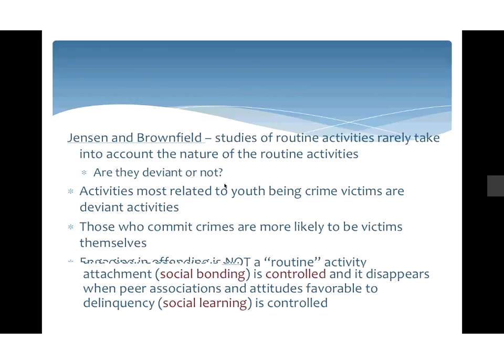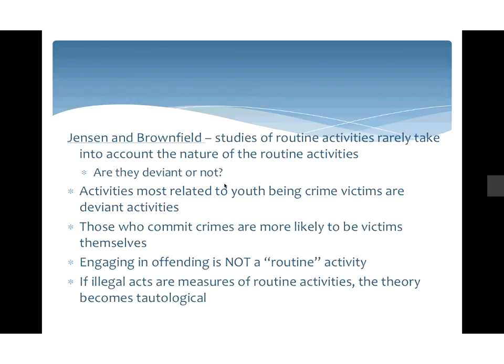Jensen and Brownfield argued that most of these studies don't take into account the nature of routine activity — what if your routine activities are deviant in themselves? Buying drugs, using drugs, being involved in a gang. A lot of activities related to youth being crime victims are deviant activities, and people who commit crimes are more likely to be victims themselves. But engaging in offending is not a routine activity — if illegal acts are measures of routine activities, then the theory becomes circular or tautological: offending leads to offending.